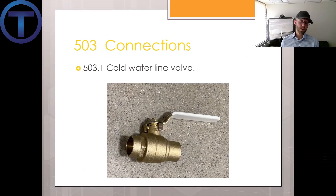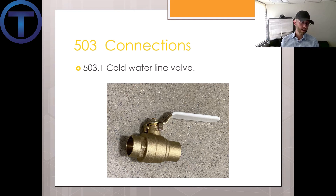Hello and welcome to this presentation of International Plumbing Code Chapter 5. In this chapter we are going to look very specifically at water heaters. Section 503 goes specifically over the connections of piping to the water heater.